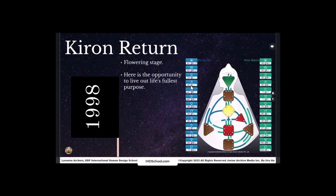Finally, we have the Chiron return, Chiron, that planetary asteroid that comes around at either 49 or 50 years of age to where it was when you were born. And Ra calls this the flowering stage, flowering, potential flowering of your life's work. So here's the place and time for him, it was 1998 where we have the opportunity to live out life's fullest purpose.